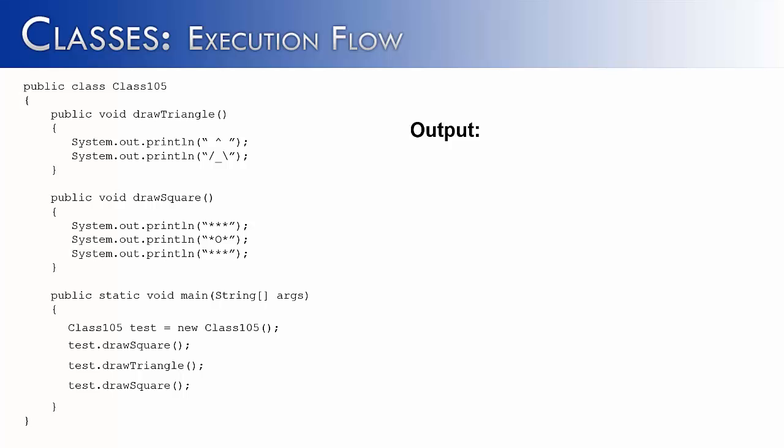Now what happens if we have more than one method that we're going to use? You can see that we have a drawTriangle and a drawSquare method. Let's see how the program flow or execution flow would work for this particular program.